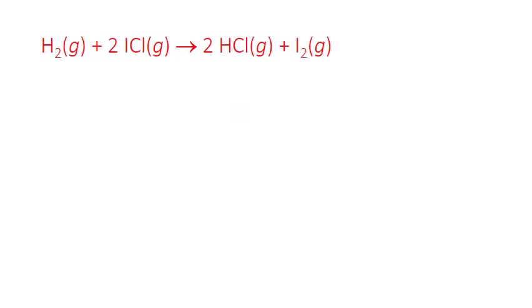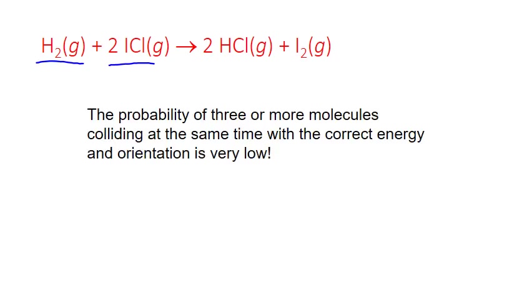Consider a reaction between three molecules: one molecule of hydrogen reacts with two molecules of iodine monochloride to produce two molecules of hydrogen chloride gas and one of iodine. The collision model states that reactions occur when molecules collide with enough energy and in the correct orientation. The probability of all three of these molecules colliding at the same time with the correct energy and orientation is pretty low, so for an appreciable reaction rate, it's much more likely that the collisions occur in a series of steps.